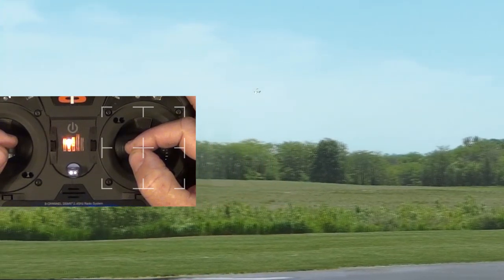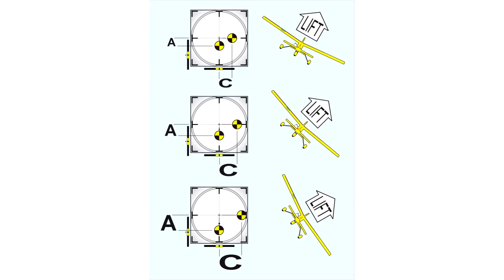During a mild bank, most of the wing's lift is still opposing the pull of gravity, and thus very little up elevator is needed to keep the turn level. During a steeper bank, there's less upward component of lift to oppose gravity, thus more up elevator is required to keep the turn level.